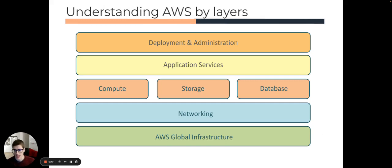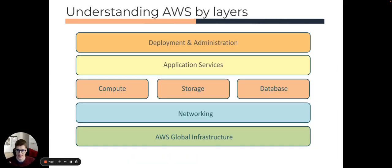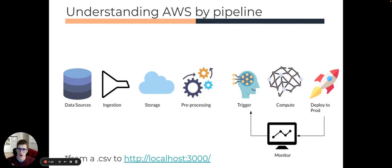Before jumping into a tutorial or code, I want to give you a bit more understanding of AWS. We can think about it as layers: the global infrastructure, the servers, then compute, storage, databases, applications, things that help with deployment, roles, permissions, and so on. We can also think about it like a pipeline — you have your data, you ingest it, you store it, you pre-process it, capture some triggers, it launches a compute, and you deploy it to your users.